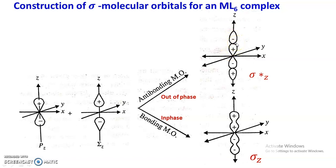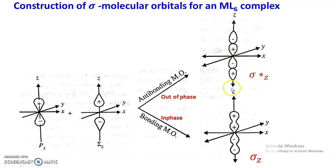This is out-of-phase combination. The lobe with the negative sine wave function of the Pz (T1u) orbital tries to overlap with the positive lobe of the ligand group orbital — also out-of-phase combination. Since overlapping is taking place along the z-axis, this is σz, but because it is an antibonding orbital it is designated σ*z. Fruitful overlapping is not occurring, and therefore this is the antibonding orbital σ*z. So when Pz combines with Σz, one bonding orbital σz and one antibonding orbital σ*z are formed.